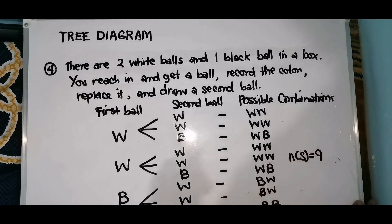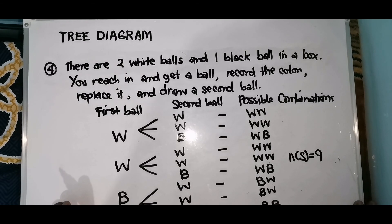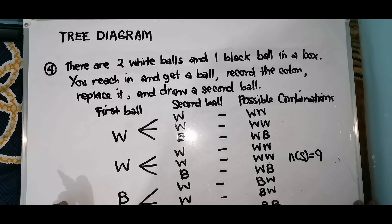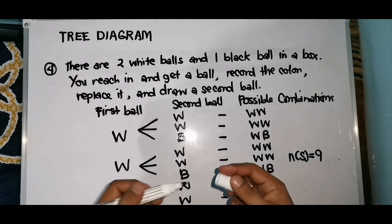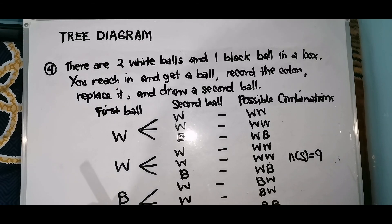That's how we find all possible combinations using a tree diagram. The tree diagram is very important so you can clearly see the outcomes, especially when answering questions about the probability of an event. I hope you learned something today. You can share this video and revisit our other videos. See you in the next video, and thank you for watching.